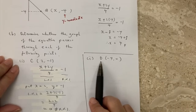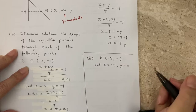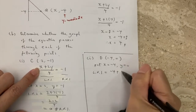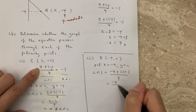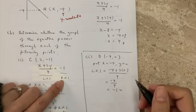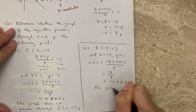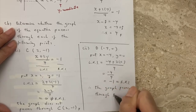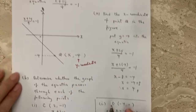For another point, we put x equals minus 4 and y equals 0 into the equation. The left-hand side is: minus 4 plus 2 times 0, over 4, which is minus 4 plus 0 over 4, giving minus 1. The right-hand side is also minus 1. Since left-hand side equals right-hand side, the graph passes through point D, which is (minus 4, 0). This is how we prove and complete example 4.